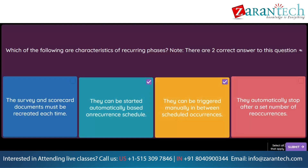Question. When you configure a supplier lifecycle template, which process is used to create the supplier record in the supplier management database? Option 1: Supplier registration. Option 2: Supplier request. Option 3: Supplier qualification. Option 4: Preferred supplier.